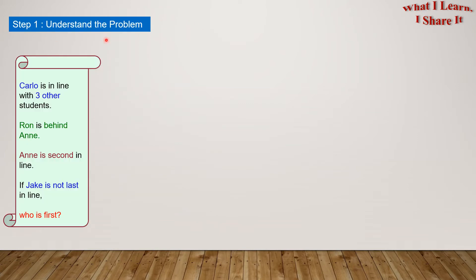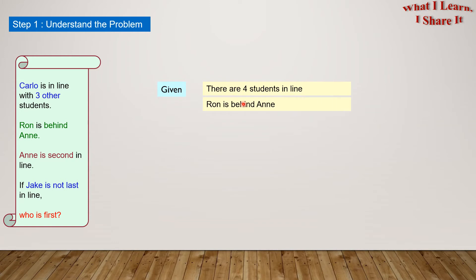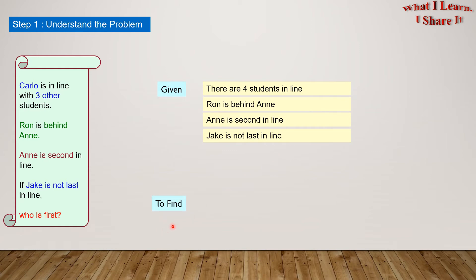Step one: understand the problem. So what is given to us? We are given all this information. In our own words we can write: there are four students in a line, Ron is behind Anne, Anne is second in line, and Jake is not last in line. And what do we have to find out? We have to find the first student in line.